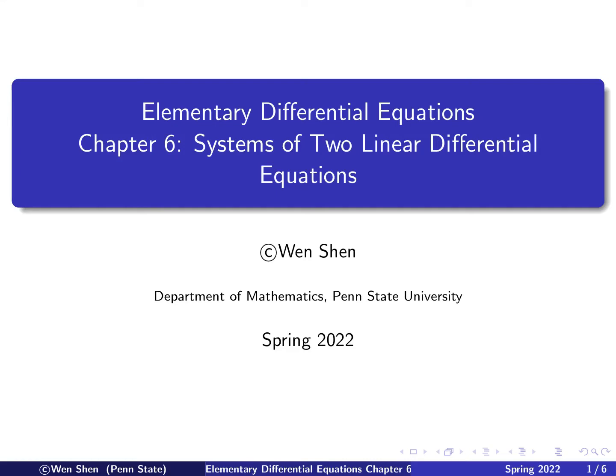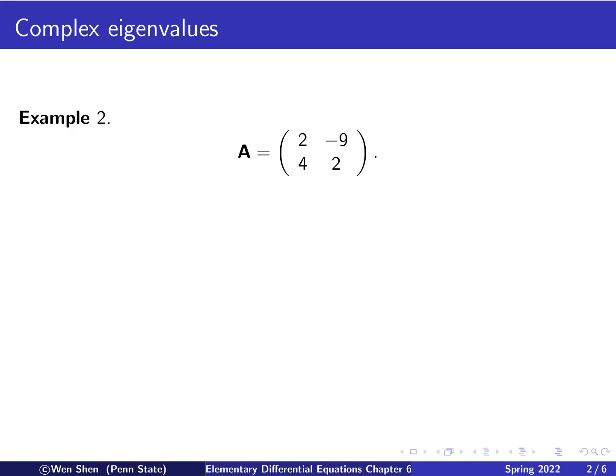Hello everyone, welcome to my videos on elementary differential equations. This is video number 4 for chapter 6, and the topic for the chapter is systems of two linear differential equations. In this video, we'll go through two examples of finding eigenvalues and eigenvectors for 2 by 2 square matrix. And for two cases, actually three, because the second case will take two examples.